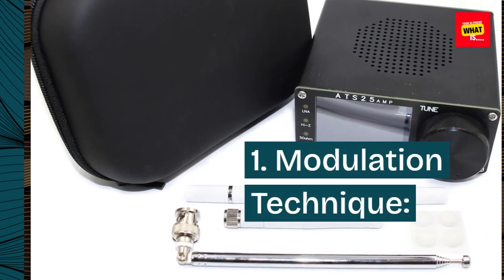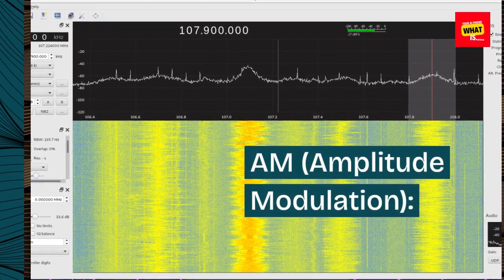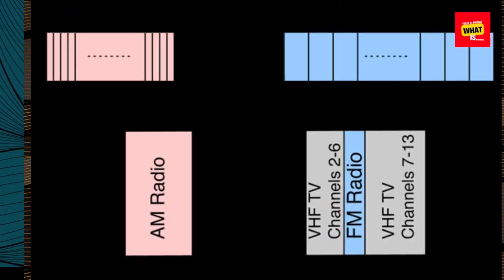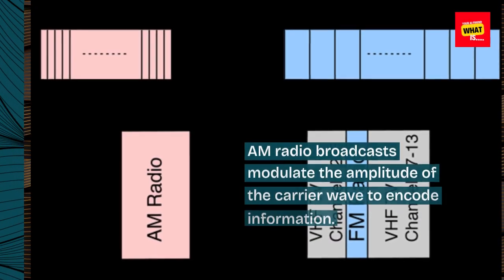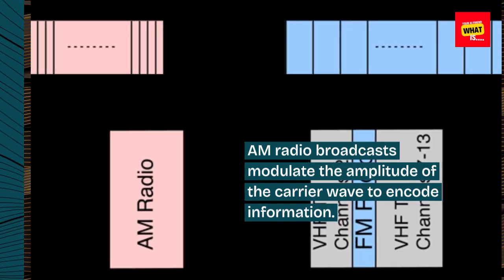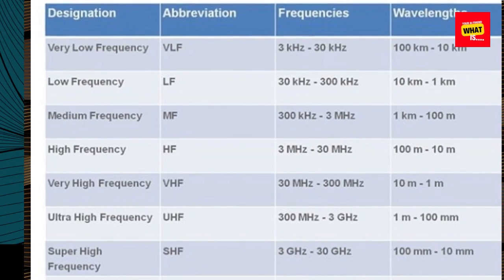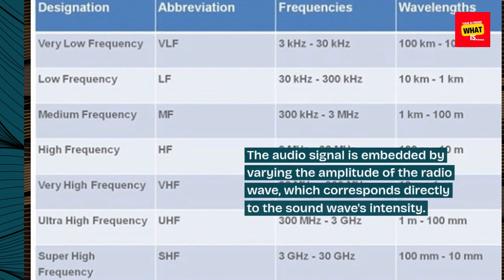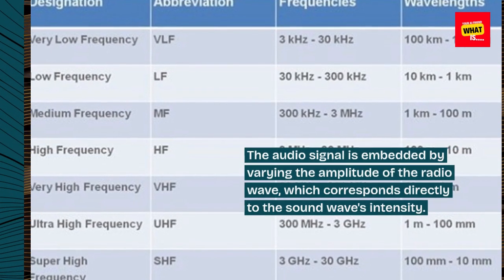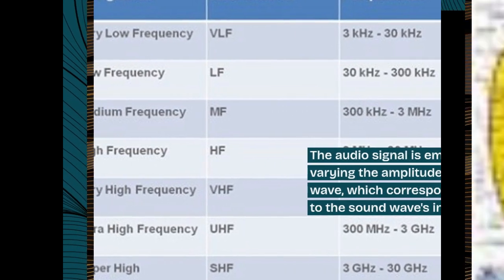1. Modulation technique. AM — amplitude modulation. AM radio broadcasts modulate the amplitude of the carrier wave to encode information. The audio signal is embedded by varying the amplitude of the radio wave, which corresponds directly to the sound wave's intensity.